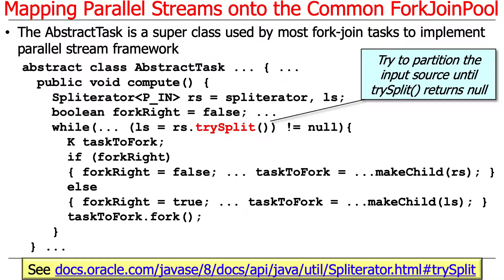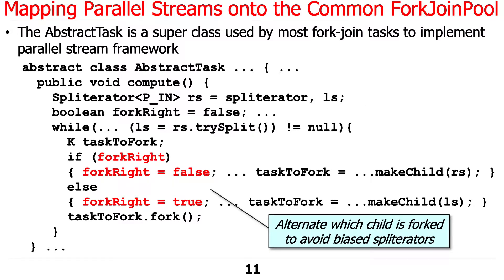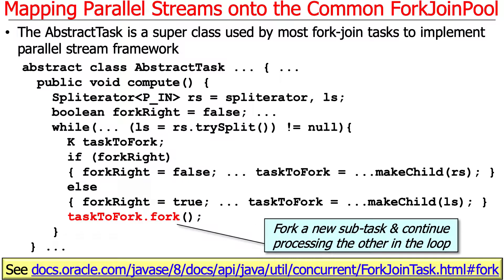So while we haven't reached the point where there's nothing else to split, we're going to split. You have RS, which stands for right-hand side, and LS, which stands for left-hand side. We split things up, and then we have a little boolean flag we set back and forth to decide which side to split next. This is meant to avoid so-called biased spliterators, where it splits things in a way that will be unbalanced. If we're going to fork the right side, we set right-fork to false so the next time we'll fork the left side. If we're forking the left side, we set fork-right to true so we'll fork the right side next time. Then we go ahead and set the task to fork — either the right child or the left child — and fork the appropriate task.